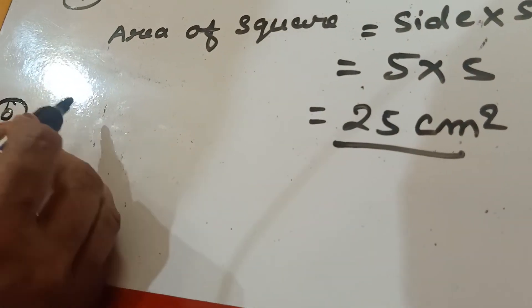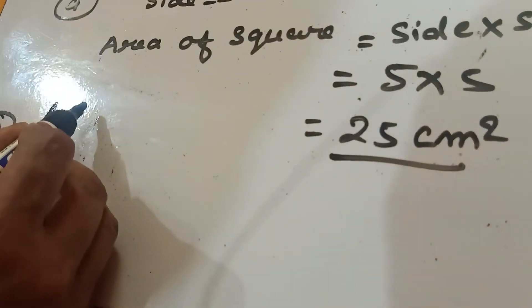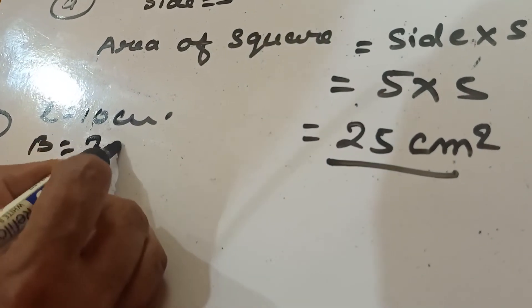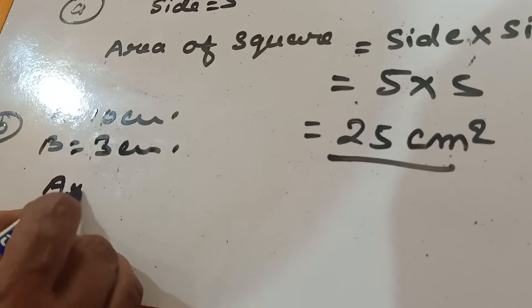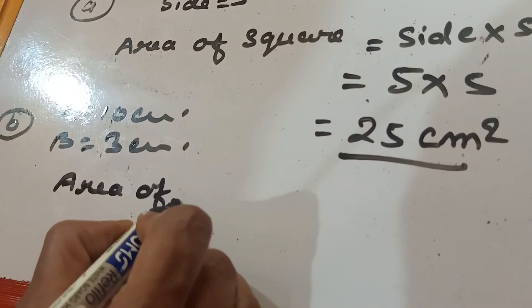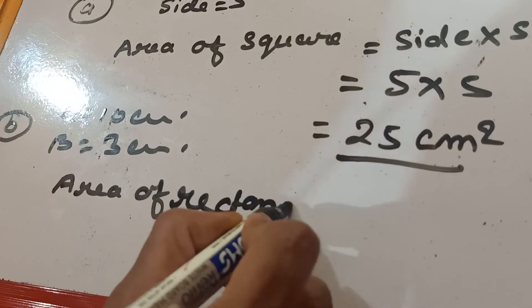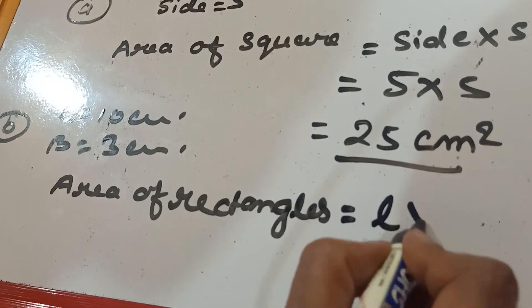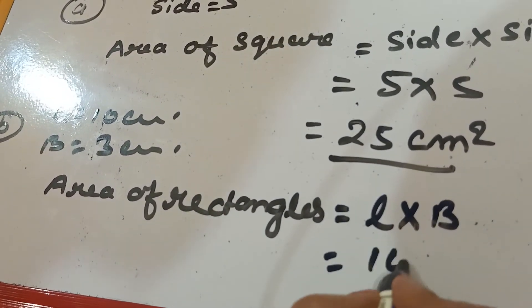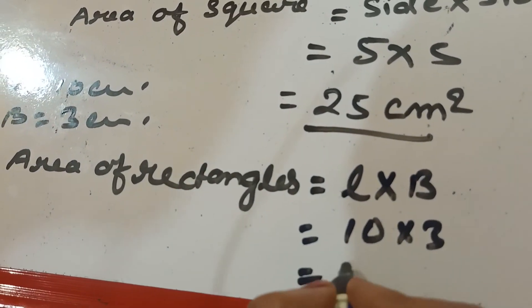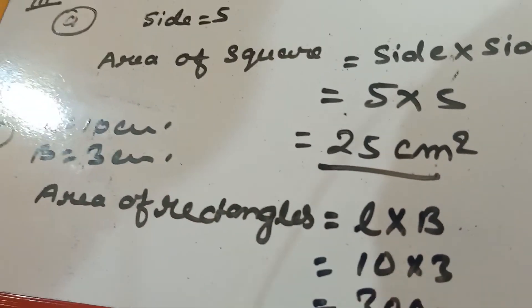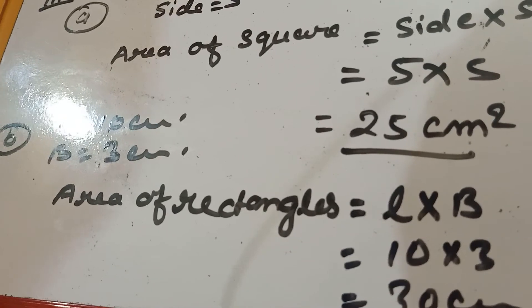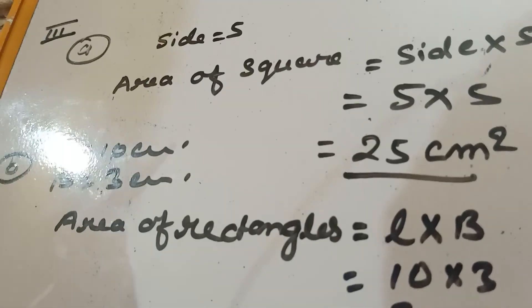From this I am taking question number B. Length given is ten centimeter and breadth is given three centimeter. And area of rectangle is equal to length into breadth. So ten into three is equal to thirty centimeter. So it is clear.